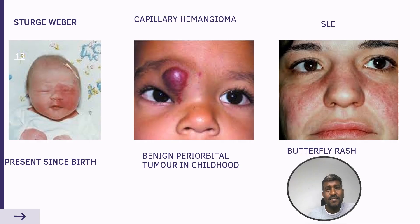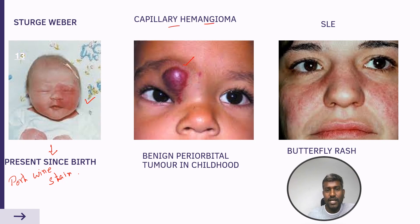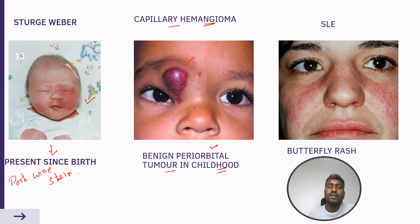This image is Sturge-Weber syndrome — present since birth with a port wine stain. The next image is capillary hemangioma, a benign periorbital tumor of childhood that will regress on its own.